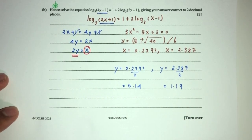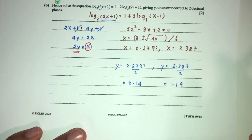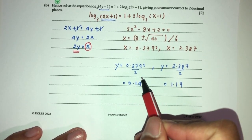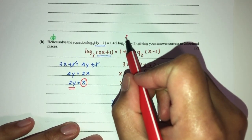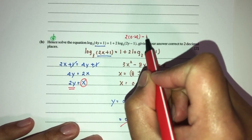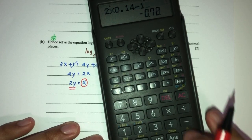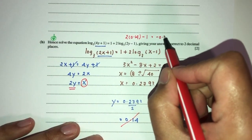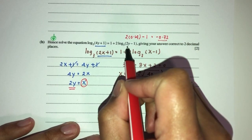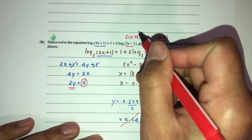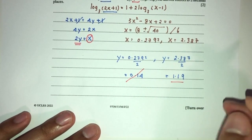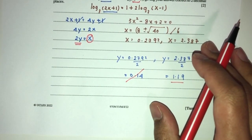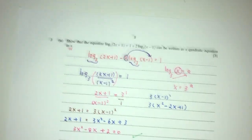We now choose the valid value. If y = 0.14, then 2y − 1 = −0.72, which is negative, and log cannot take negative values, so this is rejected. Therefore y = 1.19 is the only valid answer for part b. This is your answer for question number three.